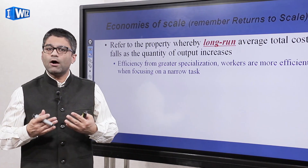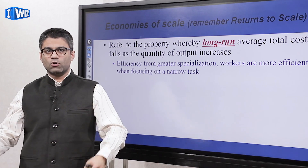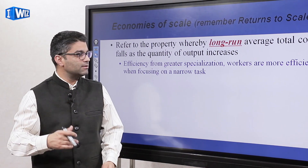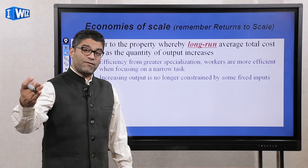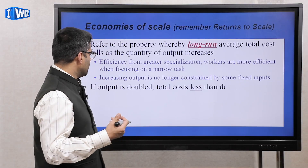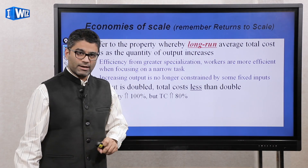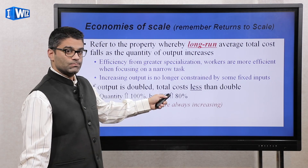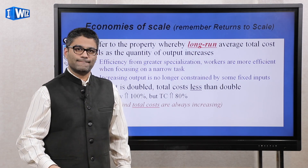This happens because of specialization — people can be more efficient because you can vary every input. If you hire more labor, you can hire another machine and open up another factory, because that's what we mean in the long run. Increasing output is no longer constrained by fixed inputs like it was in the short run. In terms of numbers: if you want to increase quantity by 100%, total costs will rise, but only by about 80%, which means your average total cost is declining.